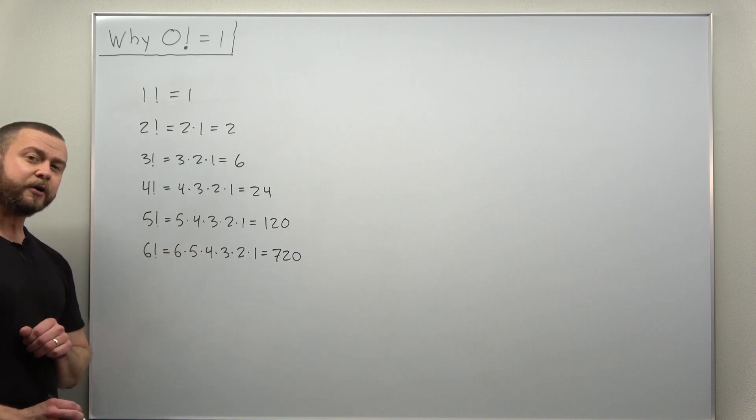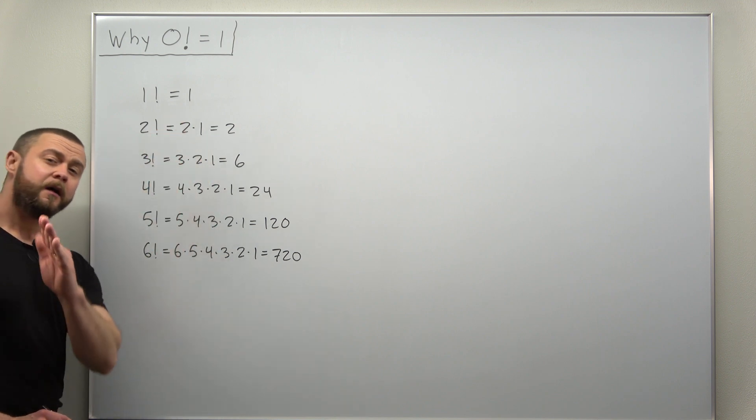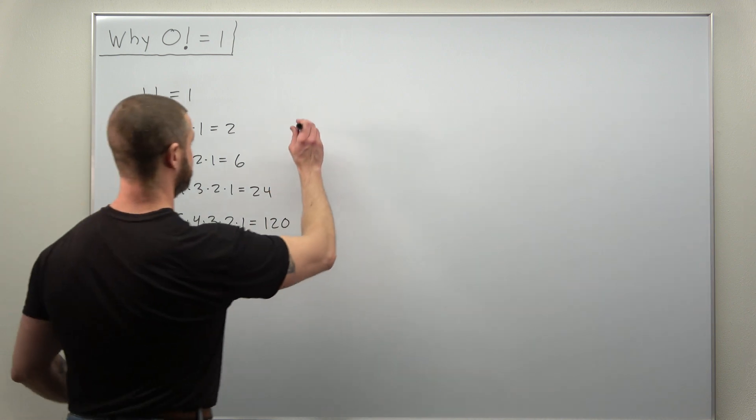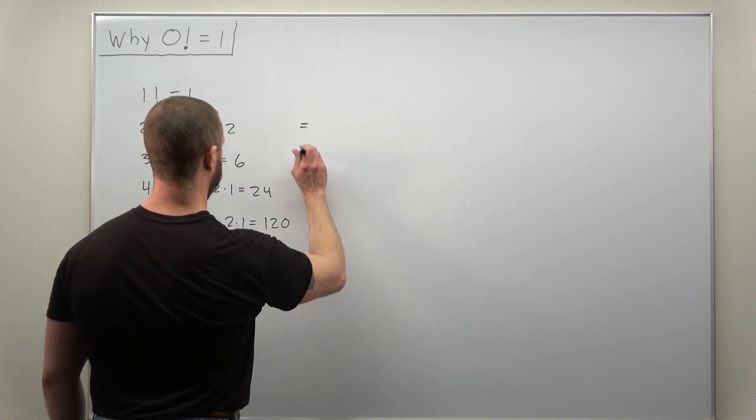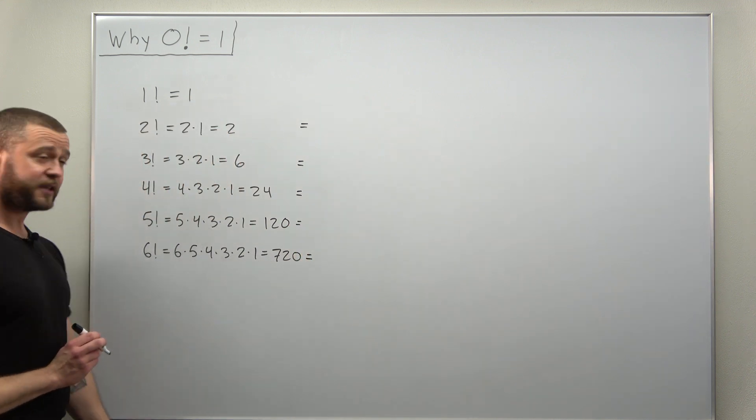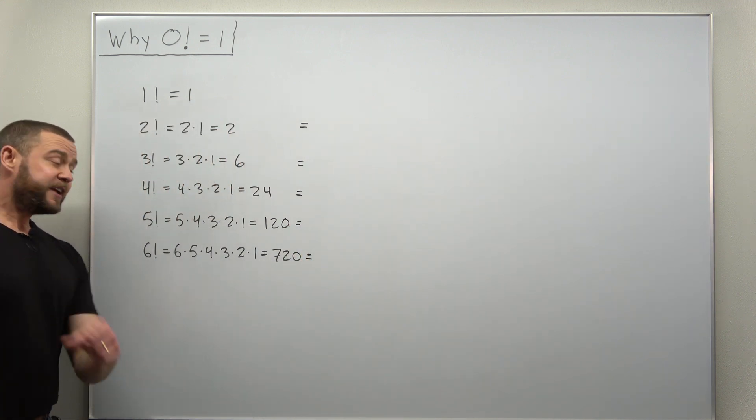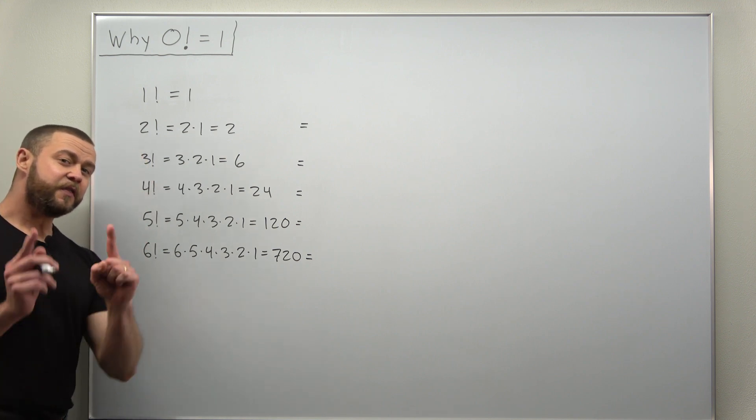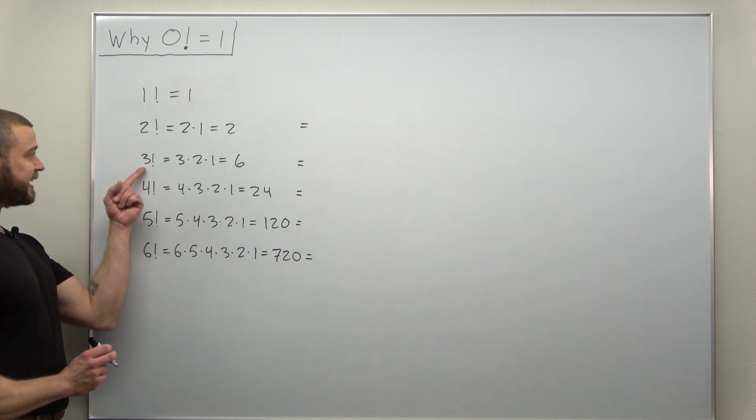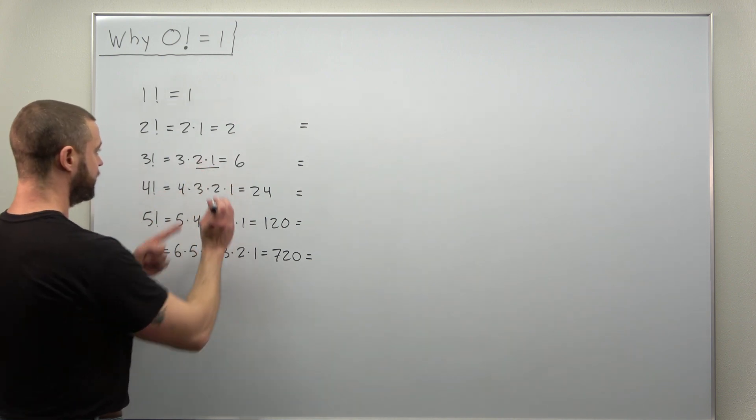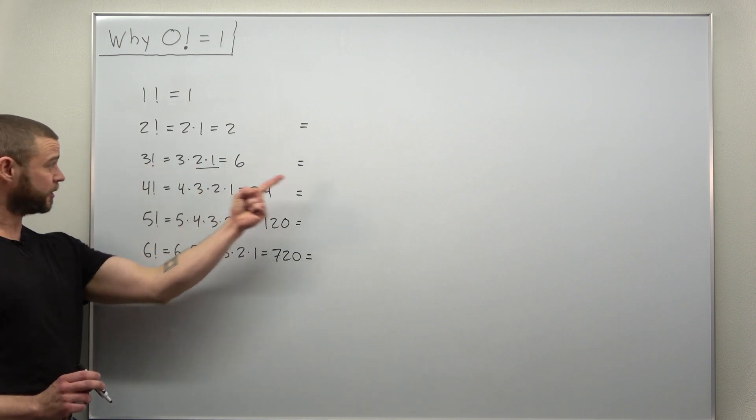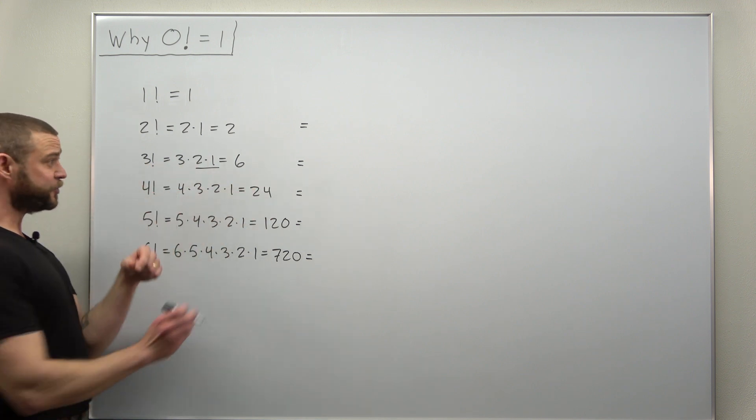Now what we're going to observe here is these factorials obey kind of a nice property or pattern. Let's rewrite these. Buried in each of these factorials is the previous number's factorial. Notice inside of three factorial we have two times one - that's two factorial. So I can write three factorial as three times two factorial.